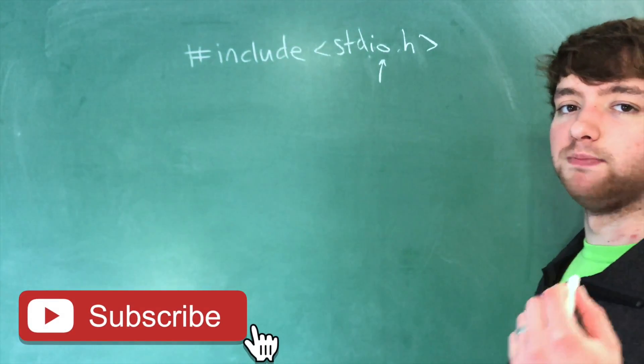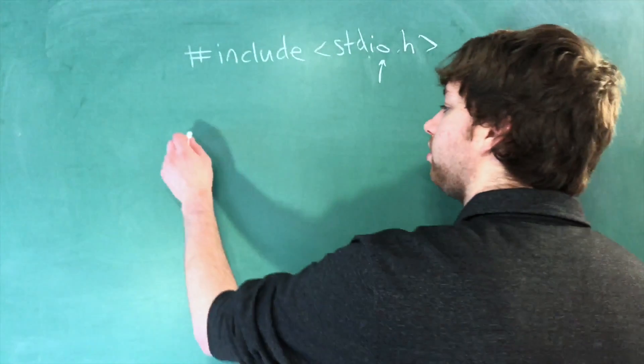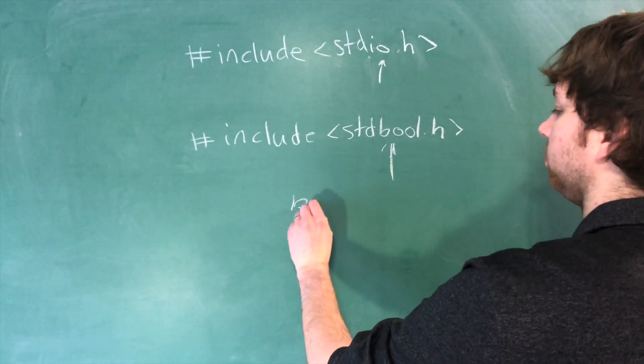Now what if you wanted to use the bool data type? What would you include then? Well, the include would look like this, where this allows us to use the bool data type.